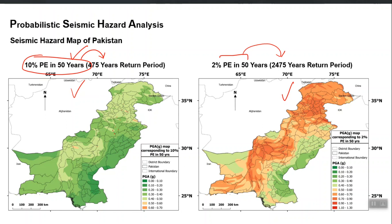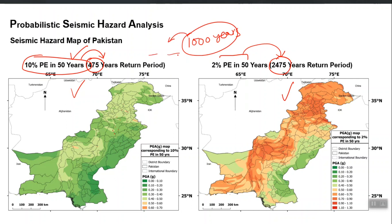You can also make a map for SLE level or any intermediate level. This is 475 years, this is 2,475 years — you can also make a map for a 1,000-year return period, an intermediate map between these two. The numbers will be in between. You can also convert 1,000 years into some probability of exceedance in some years, so different types of structures can define their design hazard level in the form of return period.